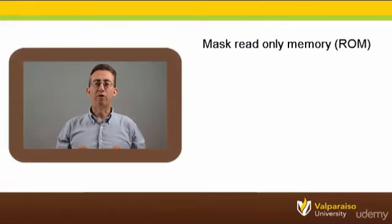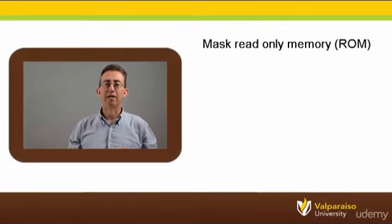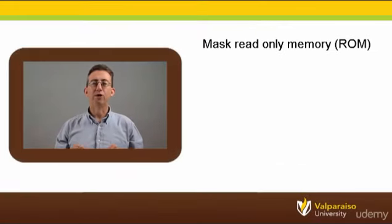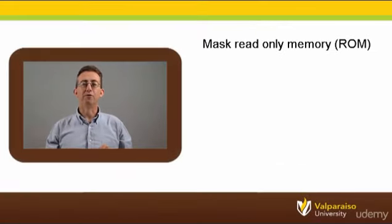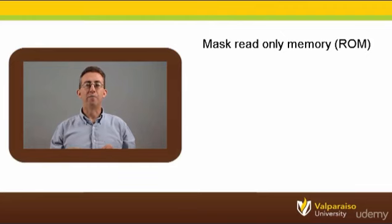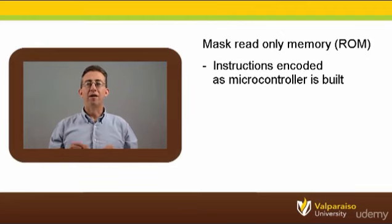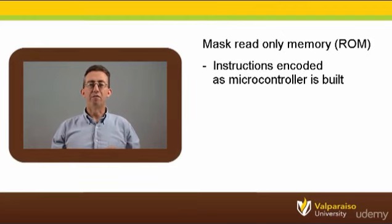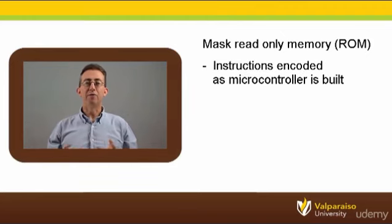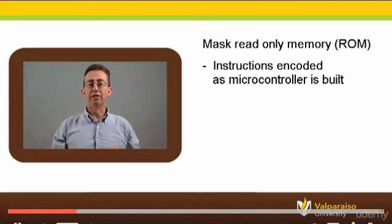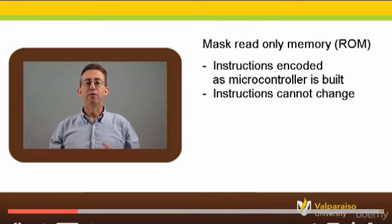The first type of program memory we will look at is a mask read-only memory, which is typically called ROM. A microcontroller with a masked ROM program memory is fabricated with the desired program instructions permanently stored in it. Therefore, its program can never be modified.